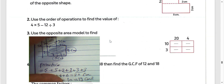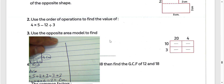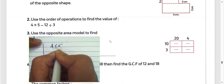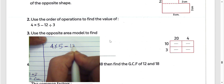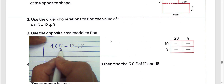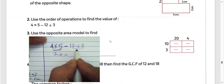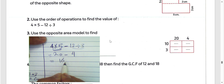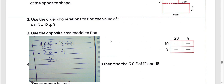Next question: use the order of operations to find the result. We have 4 times 5 minus 12 divided by 7. We know 4 times 5 equals 20 and 12 divided by 7 equals 4 (approximately), so 20 minus 4 equals 16. The result is 16.